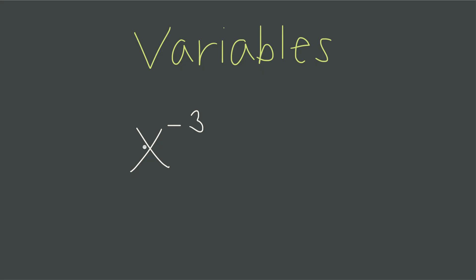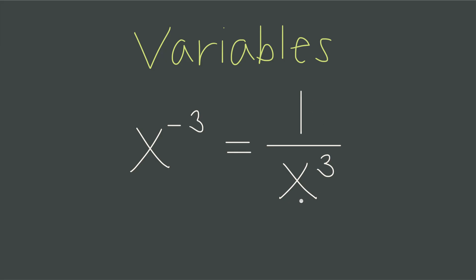What about if the base is a variable — does that change anything? No, it doesn't change anything at all. We still just take the reciprocal. The negative exponent gives us that same instruction: take the reciprocal. So 1 divided by x to the positive 3 is the same as x to the negative 3.